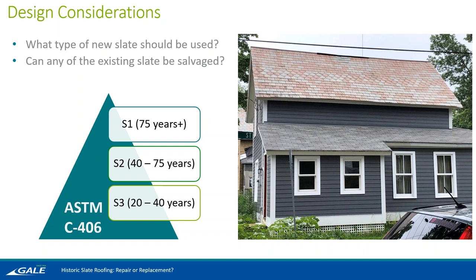One question we often get is: can any of my existing slate be salvaged? The answer is maybe. In that situation, it's typically a good idea to take down some sample slate from your original roof and subject it to ASTM C406 testing. If you find that your original slate is still S1 grade, then by all means it's a possibility. But if you find you're in the S3 range — only expecting maybe 20 to 40 more years of life — you would probably just scrap it and go back with all new. If you are pursuing the slate salvaging option, be aware of the extra time and labor involved in taking down all the original slate, sounding all of them, cleaning any debris, and storing them neatly so they can be reinstalled. There is definitely some extra cost there even if you're saving raw material.